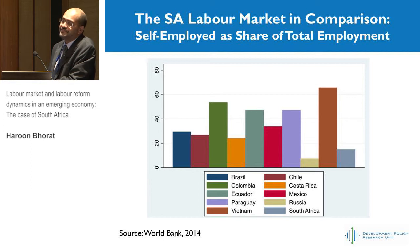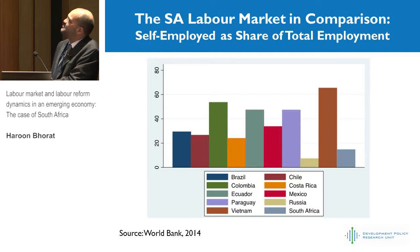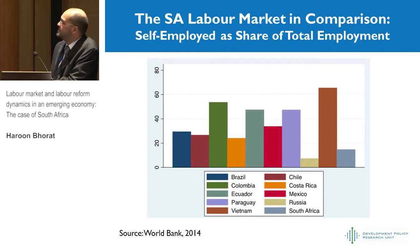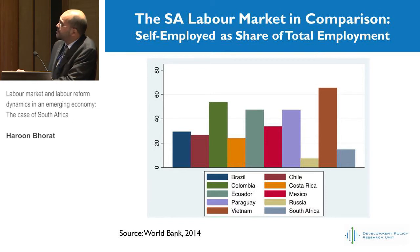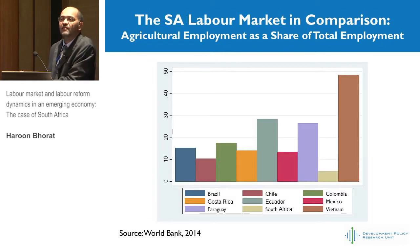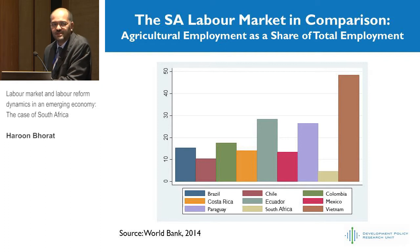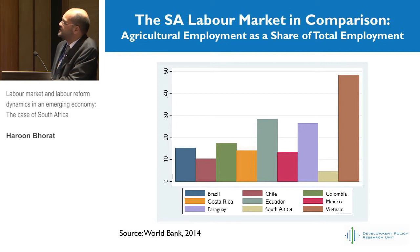Looking at the share of self-employed in total employment, there's Vietnam as a nice comparison: over 60% of workers in the Vietnamese labour market are in self-employment. In South Africa, it hovers between 12% and 15% — again an outlier. If there are no urban informal sector jobs because of a low number of formal sector jobs, often the agricultural sector provides low-quality jobs where jobs are being provided. It's not the case in South Africa. And Vietnam again provides another interesting comparison in agricultural employment.